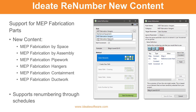Ideate Renumber now supports rules for MEP fabrication parts. We have worked with customers to identify some of the key parameters to expose, such as item number, which allows Renumber to write to that parameter. Renumber now ships with new content for MEP fabrication, as shown on your screen. Like other categories, users can also renumber MEP fabrication elements from within a Revit schedule.